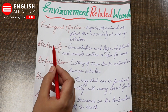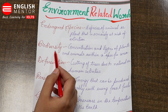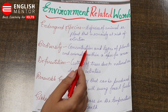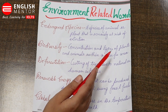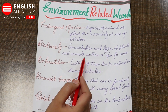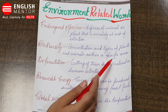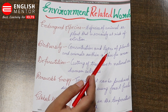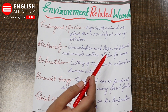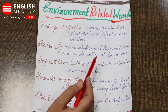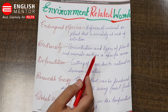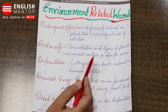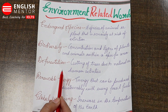The second word is 'biodiversity' — the concentration in types of plants and animals within a specific area. Animals or plants that belong to a specific region, we call that biodiversity.